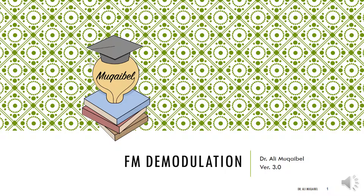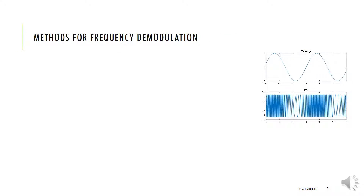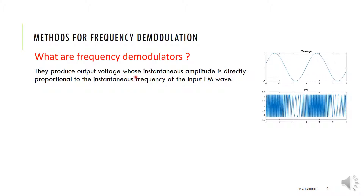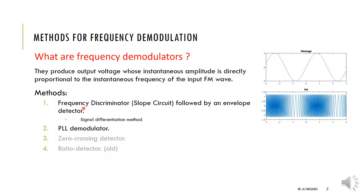We're looking at frequency demodulation methods. First, let's formally define what a frequency demodulator is. Frequency demodulators produce an output voltage whose instantaneous amplitude is directly proportional to the instantaneous frequency of the FM input wave. For example, in an FM signal, the information is contained in the frequency — high frequency means high amplitude, low frequency means low amplitude. The function of the demodulator is to take this signal and produce the message itself.